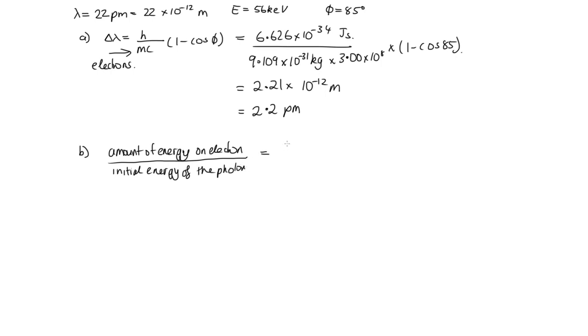Okay, so the amount of energy on the electron, that's going to be the energy lost by the photon, because that's where that energy comes from. So if we call E the initial energy and E prime the final energy of the photon, then this is how we can write this expression mathematically.